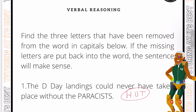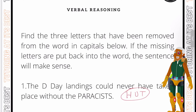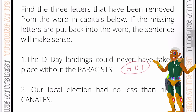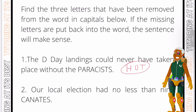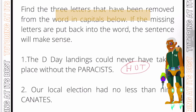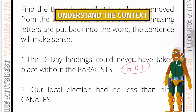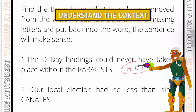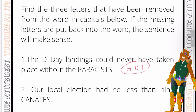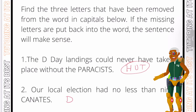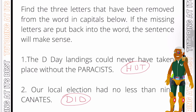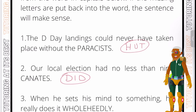Question two: 'Our local election had no less than nine CANDATES.' When we're having an election, we have candidates — people who stand for election. The three-letter word missing is D-I-D, giving us 'candidates', which is what we call someone who stands for election.